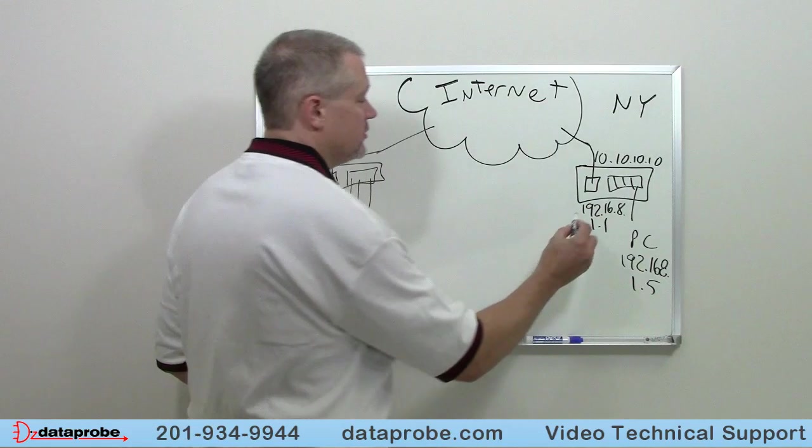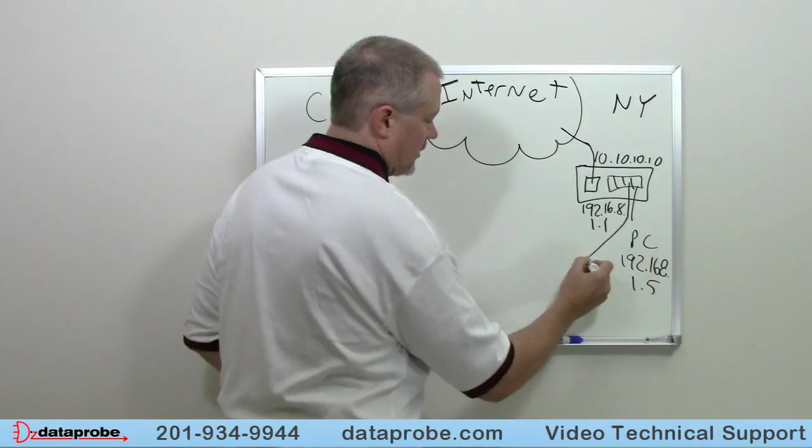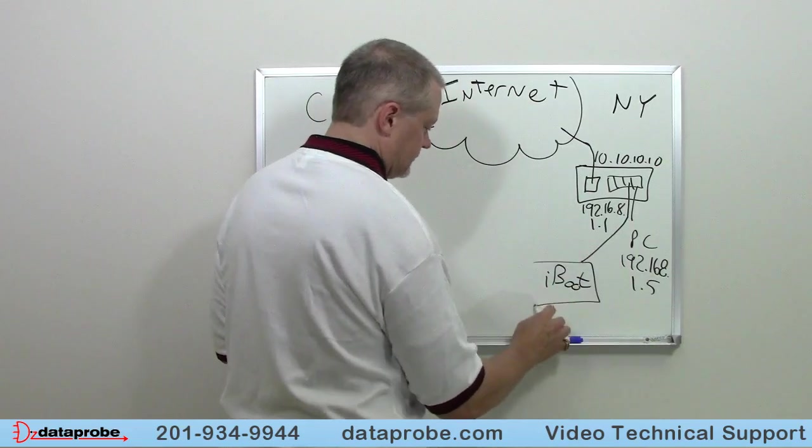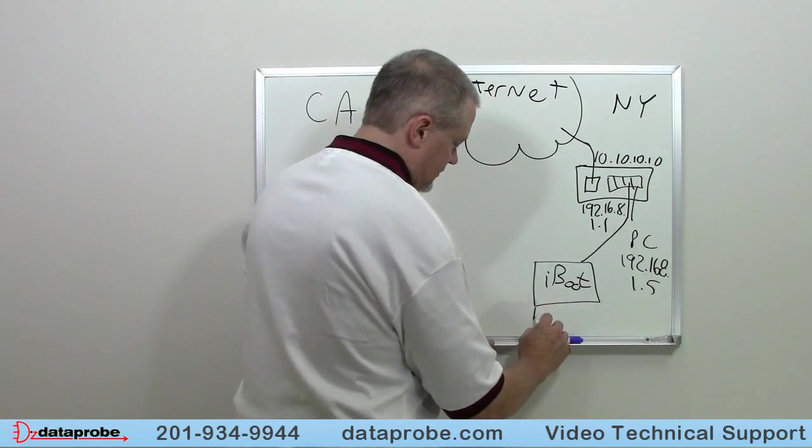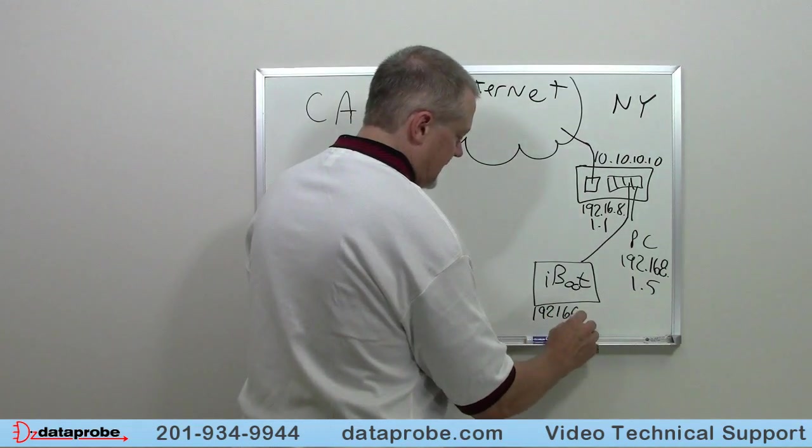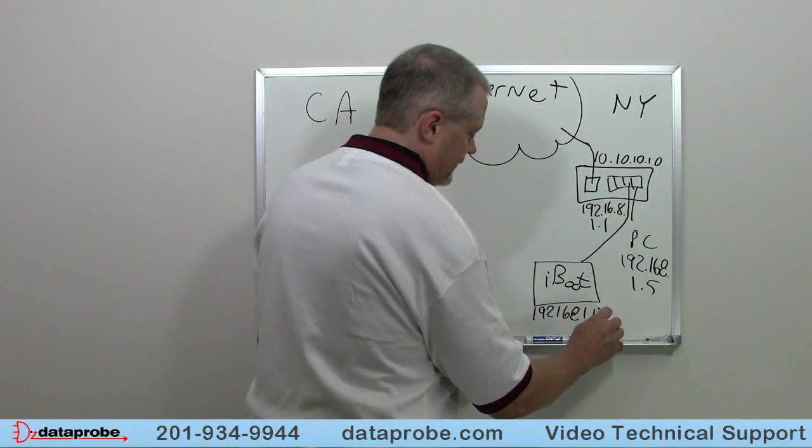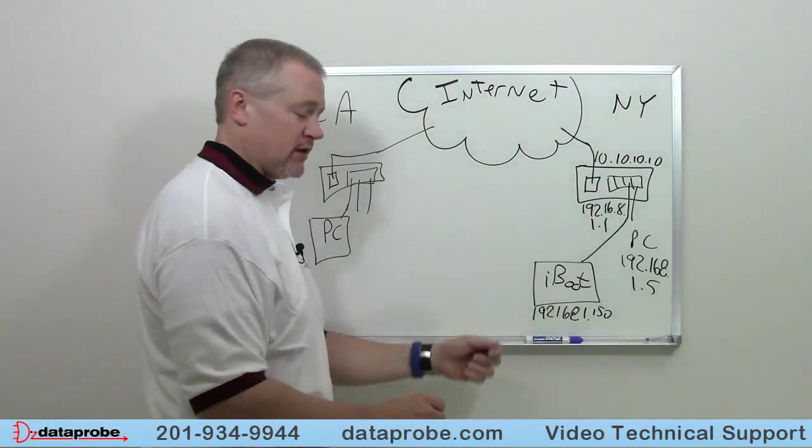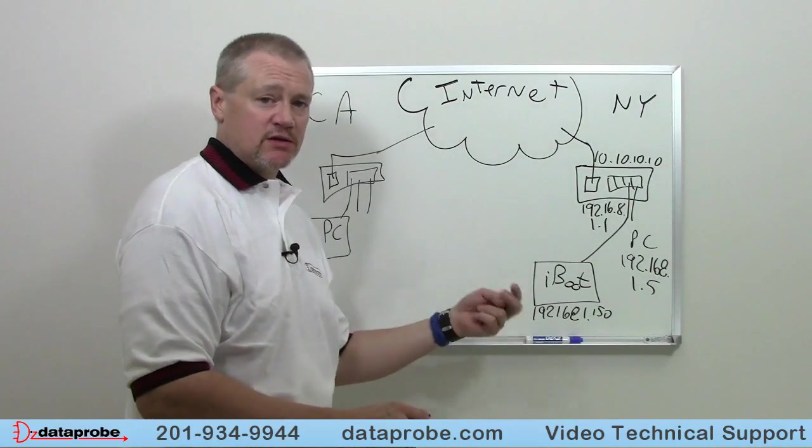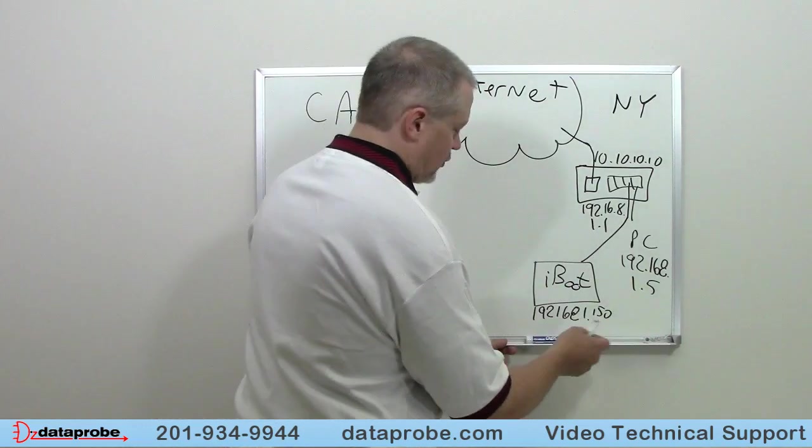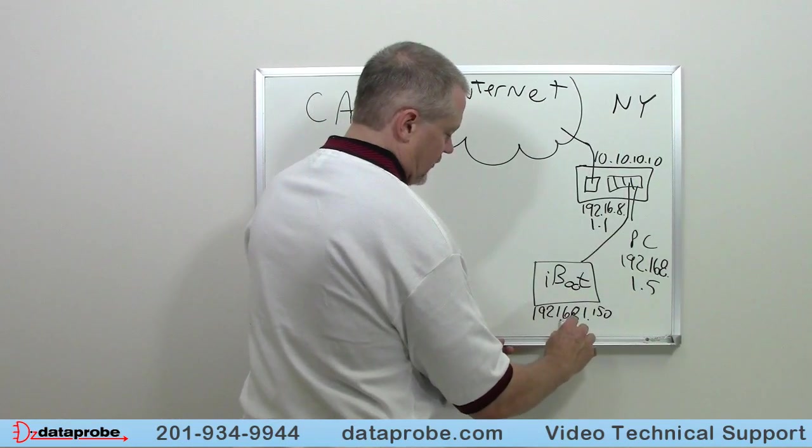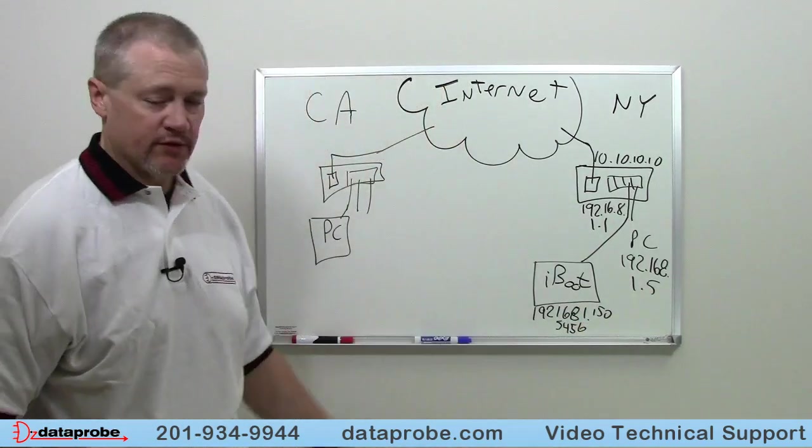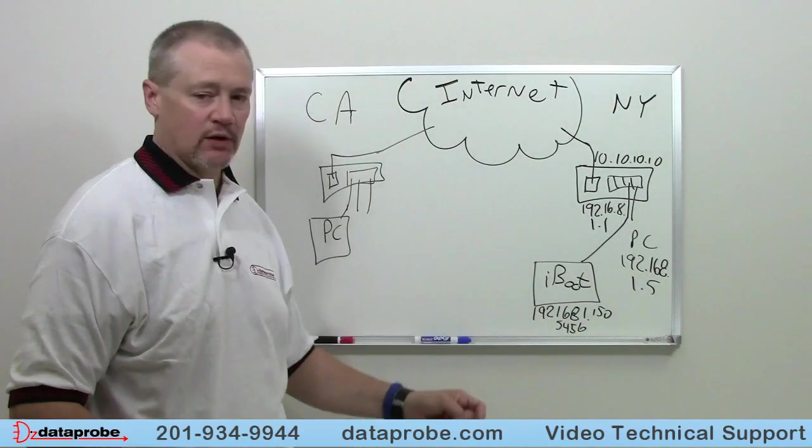In our example, let's suppose in New York we have an IP address for our iBoot. It doesn't matter if it is a G2 or whatever version we have. The unit is going to have a local IP address of 192.168.1.150. We program that using our local PC setting up as 150. Let's suppose we are also going to set up a separate port that isn't a web port or a telnet port. So we are going to choose port in this example, 5456. That is how our unit is going to be locally accessed on that port and that local IP number.